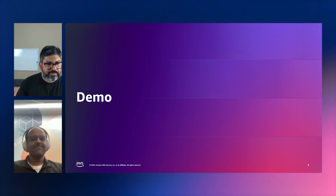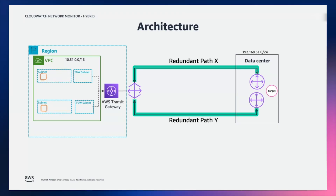Sure. Thank you so much, Karthik. For the demo, we'll go to our AWS console. For this demo, we will use this architecture. Here we have on-premises connected to AWS via Direct Connect. We have workloads running across two different subnets, and these workloads need to communicate with an on-premises application via Direct Connect. These workloads are very latency sensitive, and the engineering team needs to get alerted the moment they see an increase in latency and take action. For this, we will use CloudWatch Network Monitor.